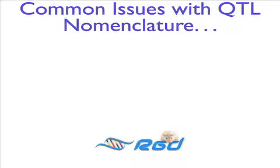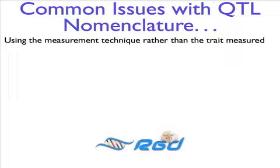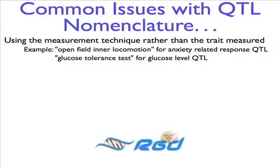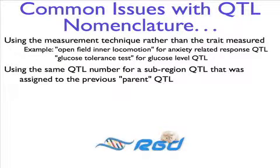Here are some problems we've seen with QTL nomenclature in the literature. Sometimes, researchers use the measurement technique rather than the trait to name their QTLs — for example, open field inner locomotion or glucose tolerance test. Another problematic practice is to use the same QTL number for a sub-region QTL that was assigned to the previous parent QTL, making it impossible to distinguish the two.